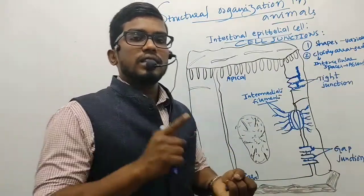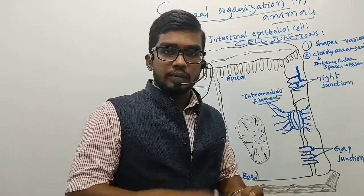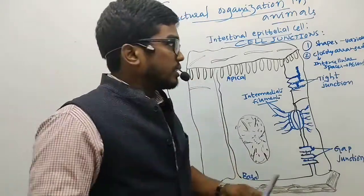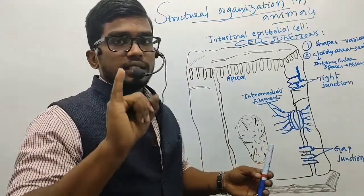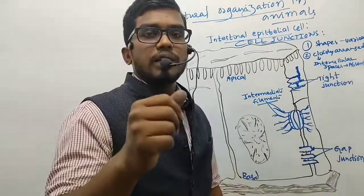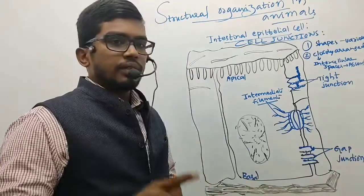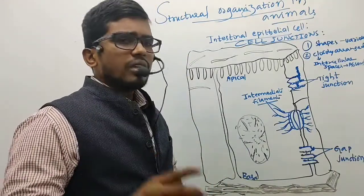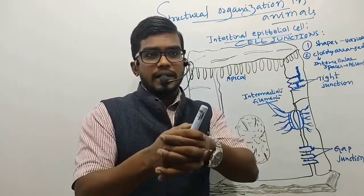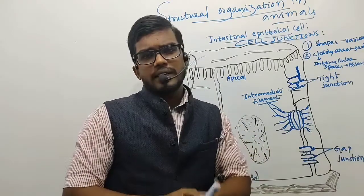Epithelial tissues are classified into two types: simple epithelial tissues and compound epithelial tissues. Simple epithelial tissue is generally made up of a single cell layer, whereas compound epithelial tissue is made up of more than one cell layer. These epithelial tissues are held together with very little intercellular matrix.